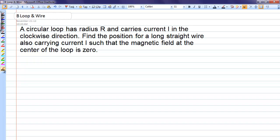So in this problem we have a circular loop carrying a current that causes a magnetic field and we have a long straight wire carrying current that causes a magnetic field. Let's just review what the magnetic fields are for those two situations.